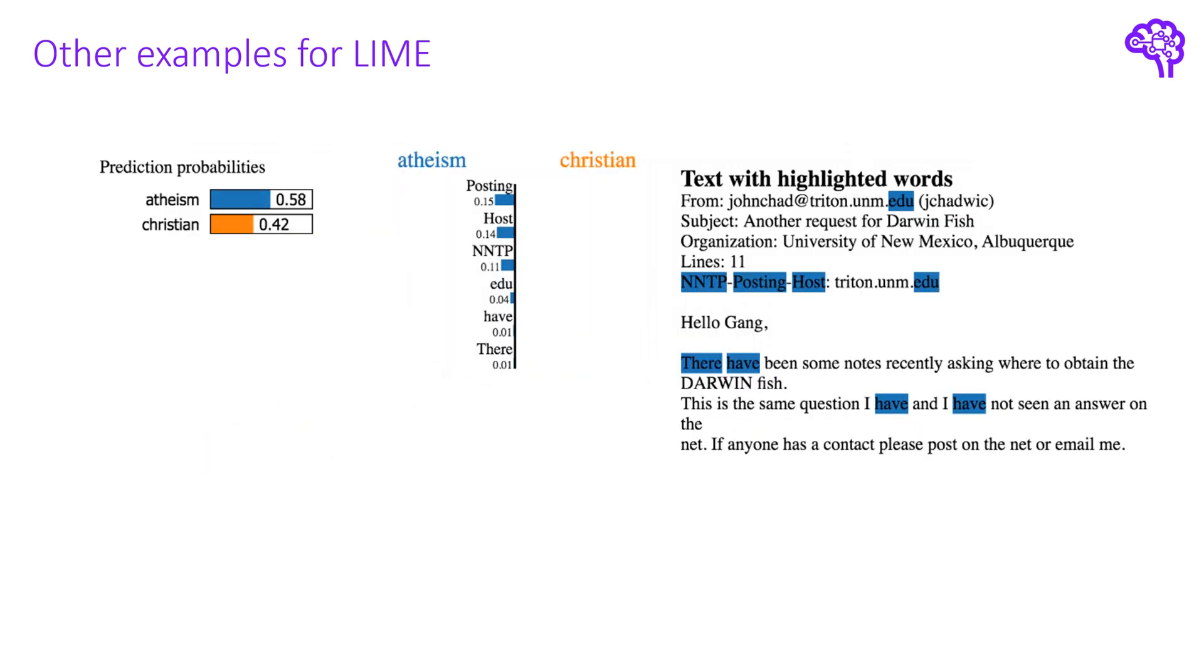Here's another example for text data. This example shows how helpful LIME can be for validating a model. On the left, we can see that the output class was atheism with 58% probability. And in the middle, we can see hosting, host, NNTP and EDU led to a prediction for atheism. However, with our domain knowledge, we know that those words have nothing to do with the religion. And that's why we can say there's something going wrong in this model. In the paper, they also suggest to always look at several local predictions to get a global understanding of what our model is doing.